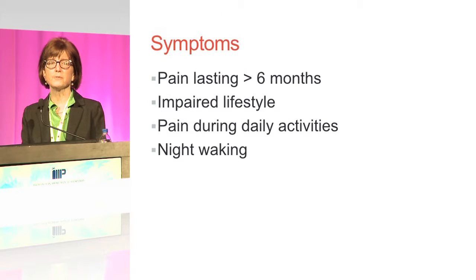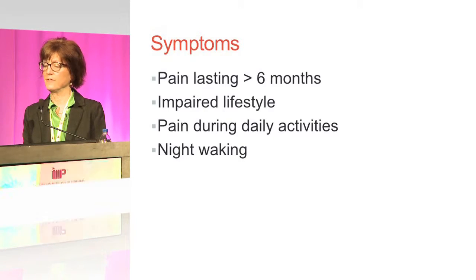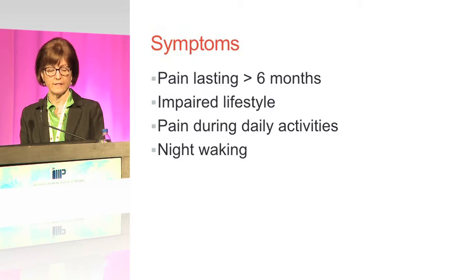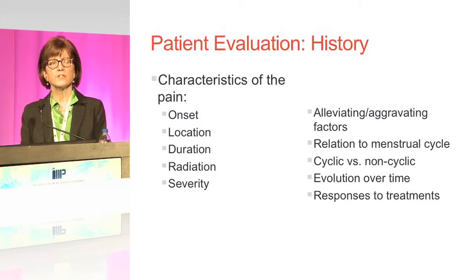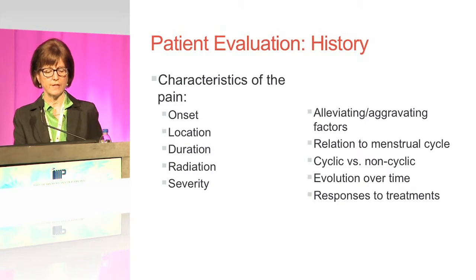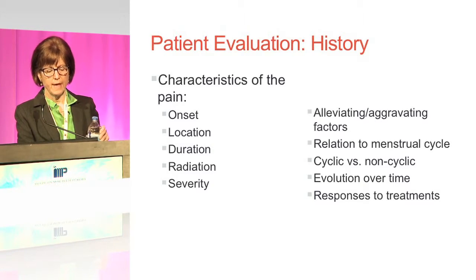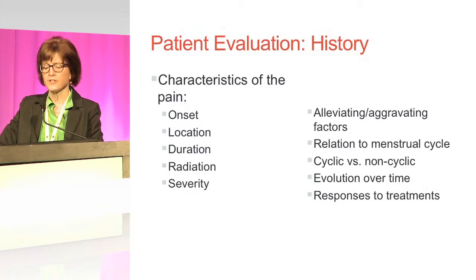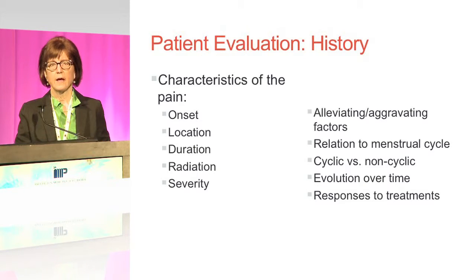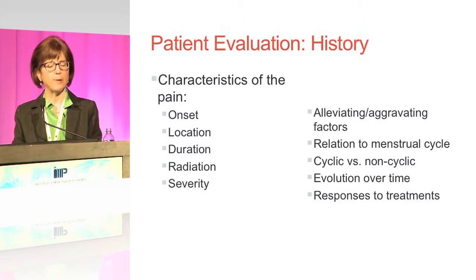Symptoms of chronic pelvic pain must last for more than six months and definitely affect the life of the young woman. This pain occurs during daily activities and can be associated with waking at night. Important questions to ask include characteristics of the pain: when it started, where it occurs, how long it's lasted, where it radiates, and the severity. Also ask what makes it worse, what aggravates it, what makes it better, how it's related to the menstrual cycle, how it occurs over time, and how it has responded to different interventions.